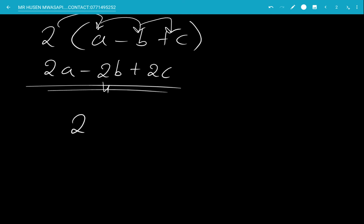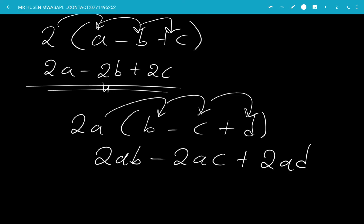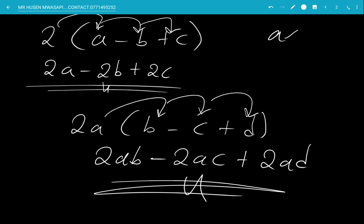If you have 2a times open bracket B minus C plus D, the 2a multiplies everything inside. 2a times B gives you 2ab; 2a times negative C gives you minus 2ac, since A comes first then C follows; and 2a times D gives you plus 2ad. Note that A times D and D times A are both AD — multiplication order doesn't matter.